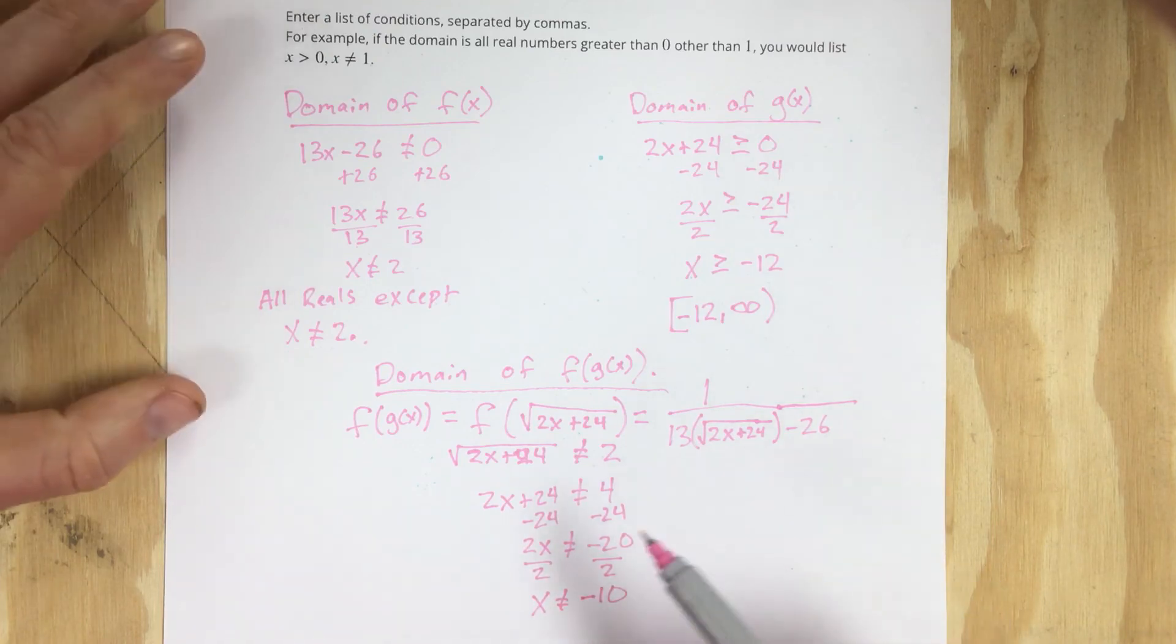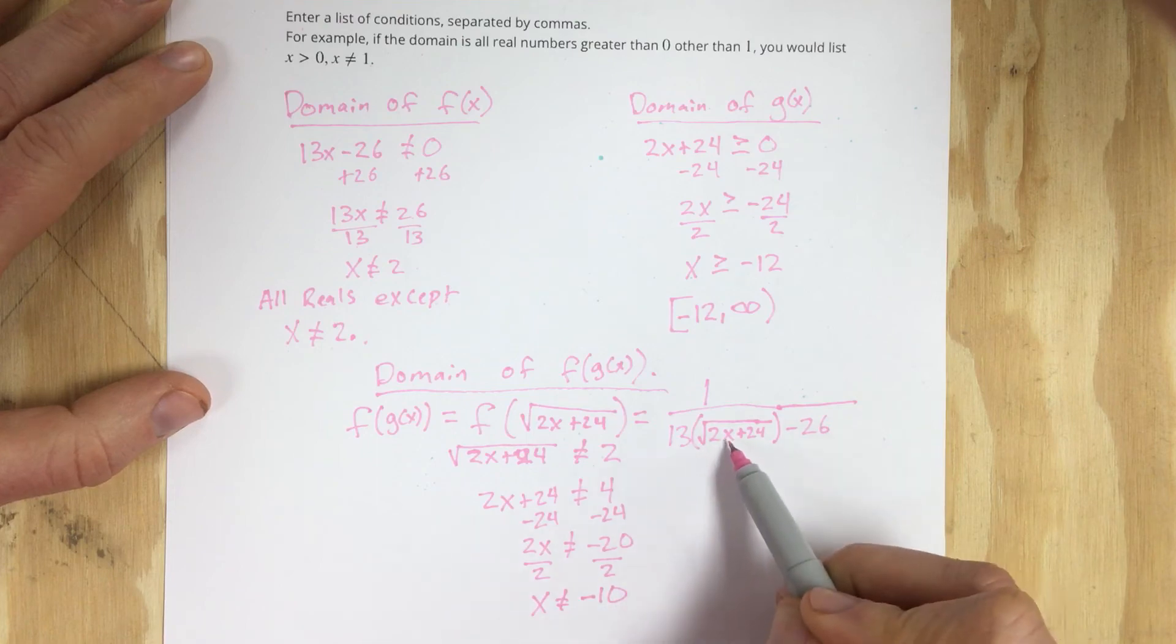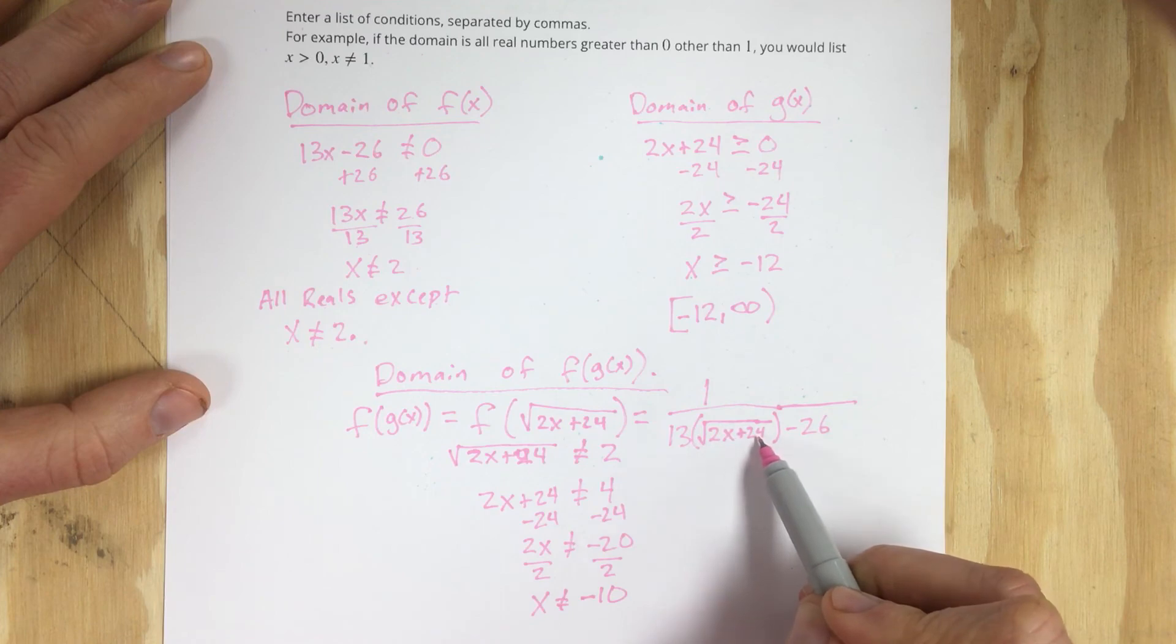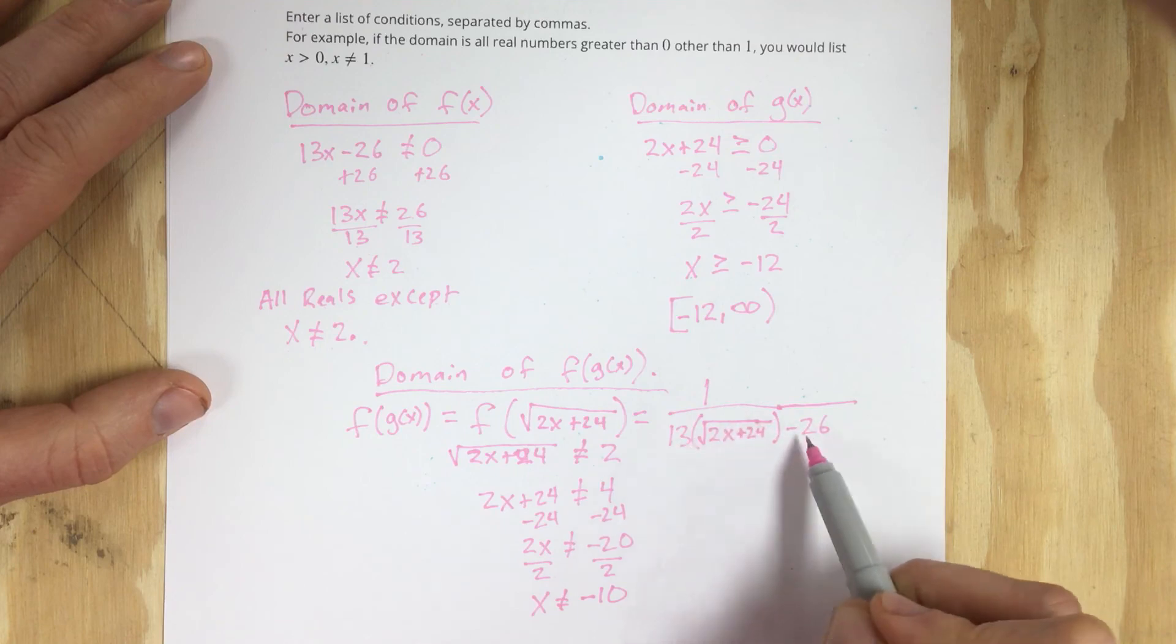So what I figured out here is that I cannot have negative 10 as a solution, because if I plug negative 10 in to this equation, that would give you negative 20 plus 24, which would be 4. Root of 4 is 2. You'd end up getting 0 down here because 13 times 2 is 26, 26 minus 26. You get a division of 0 down here.